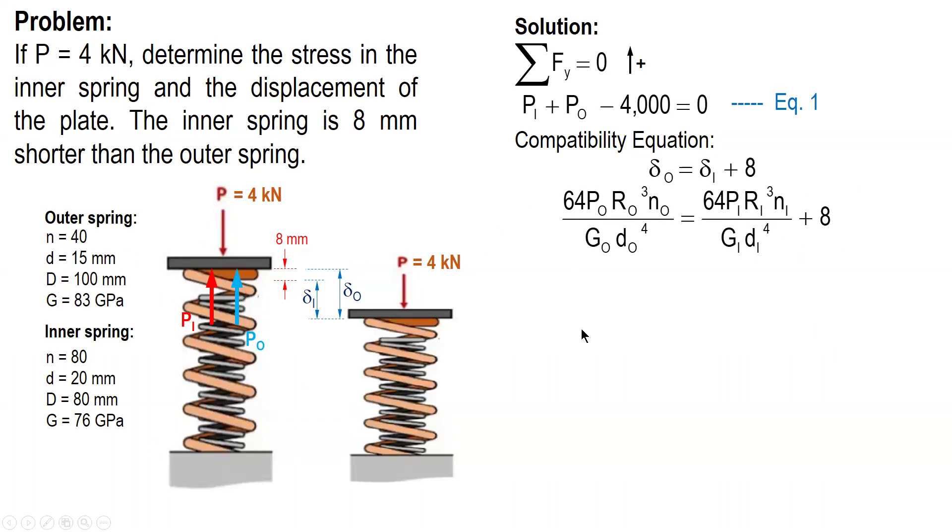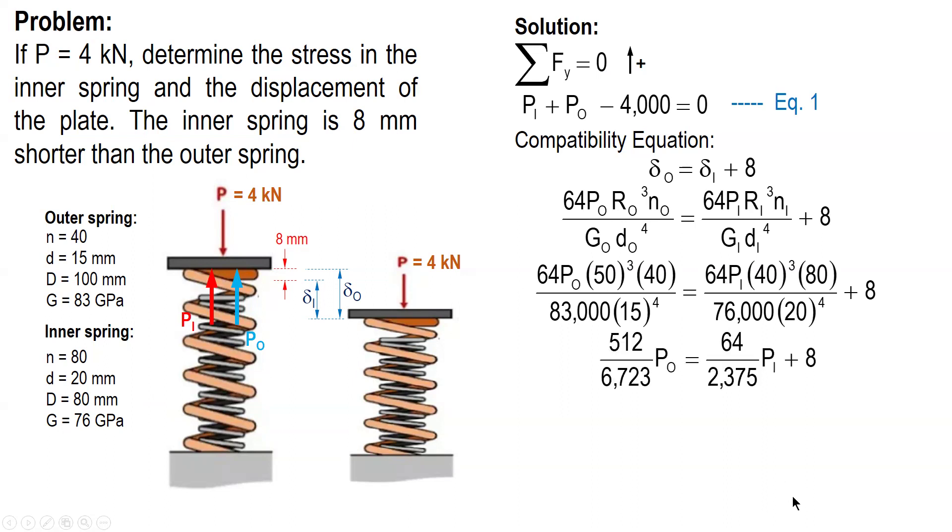For inner, mean radius is 40, so the mean diameter is 80. Substitute all the values. And we can relate P O in terms of P I. Okay. Keep as fraction to avoid run-off errors. So, equation 2.